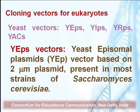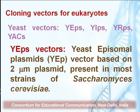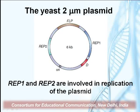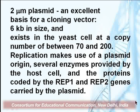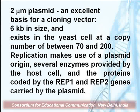YEP vectors, or yeast episomal plasmid vectors, are based on the 2-micron plasmid present in most strains of Saccharomyces cerevisiae. The natural 2-micron plasmid is isolated from Saccharomyces cerevisiae and modulated to form the yeast episomal plasmids. This plasmid contains Rep1 and Rep2 genes involved in its replication. The 2-micron plasmid is an excellent basis for a cloning vector — it is 6 KB in size and exists in the yeast cell at a copy number between 70 and 200.